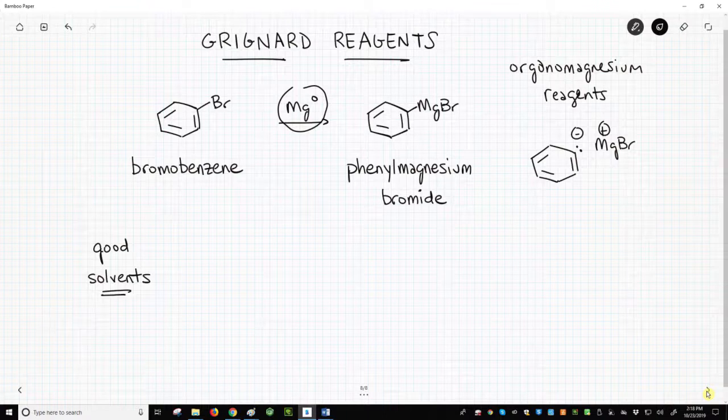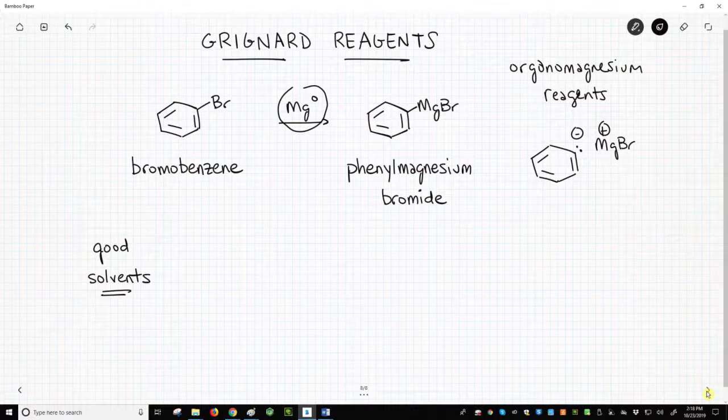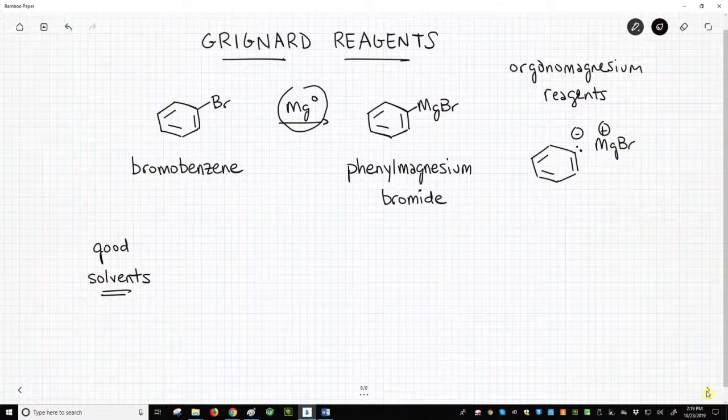The magnesium has been oxidized and the carbon reduced. This same reaction can be performed on simple alkyl halides like iodomethane or chloromethane. In a previous video, I said inorganic chemists call this process an oxidative insertion.